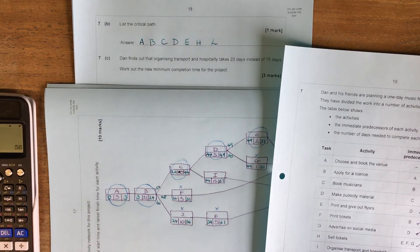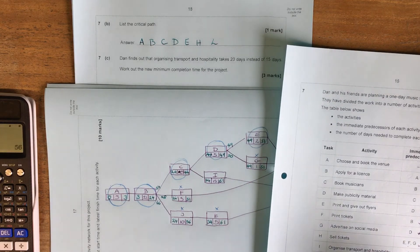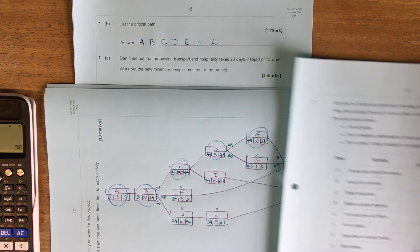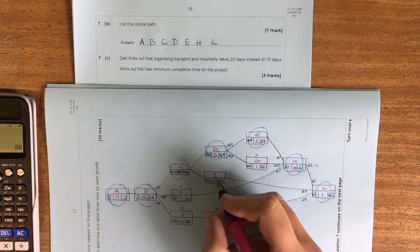Transport and hospitality was I. So I is going from 15 up to 20. So that's this one here.